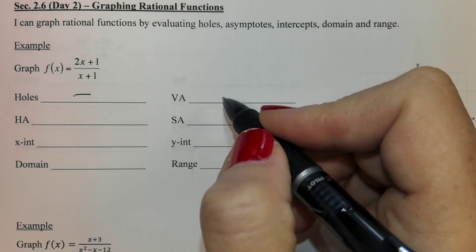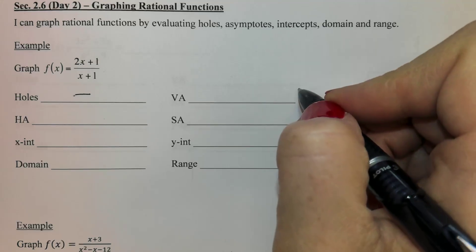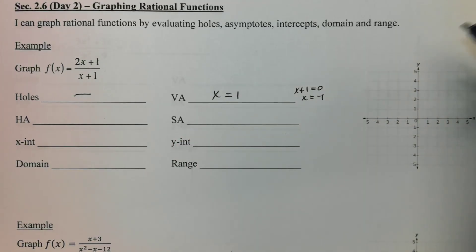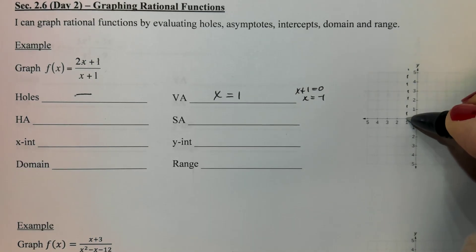Vertical asymptotes are found by taking the denominator and setting it equal to zero. So if I take x plus one set equal to zero I would get negative one. So that is my vertical asymptote at negative one.